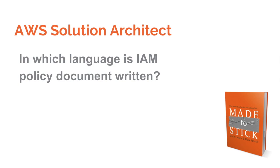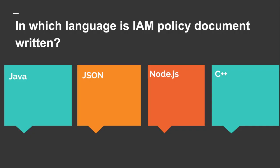Today's question is: in which language is the IAM policy document written? The options are Java, JSON, Node.js, and C++. Let's look at the options — Java, JSON, Node.js, and C++.